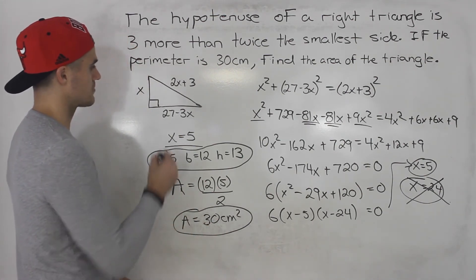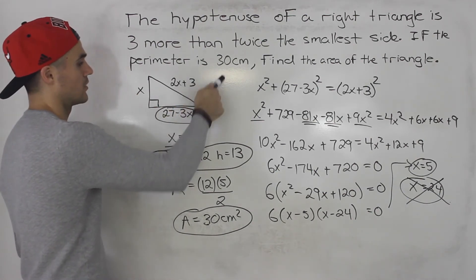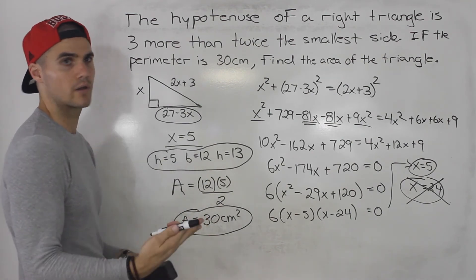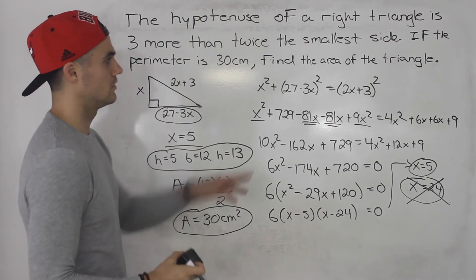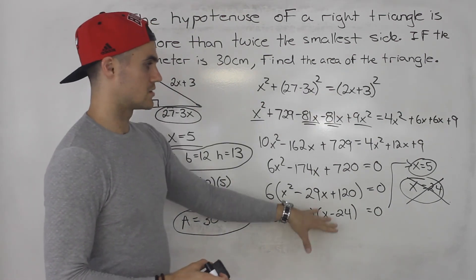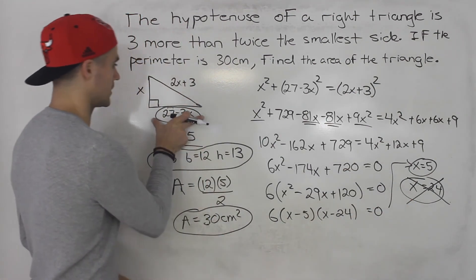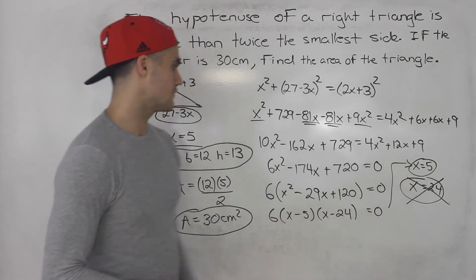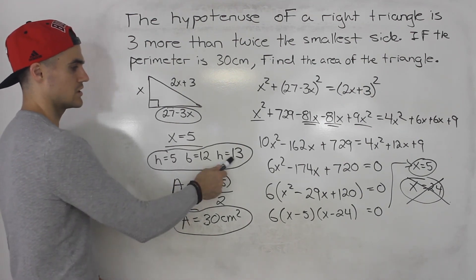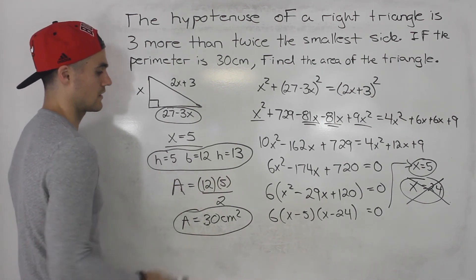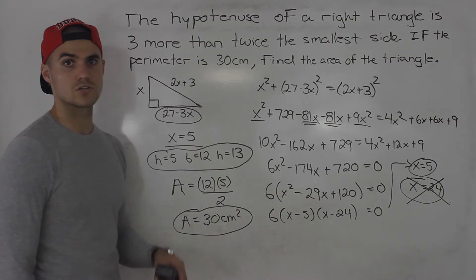The area is the same number as the perimeter — that's just a coincidence, not always going to happen. So 30 centimeters squared is the answer. The trickiest part was getting an expression for that third side using the perimeter. Once you have that, everything is in terms of one variable, Pythagoras' theorem applies, and you solve for x. x equals 24 doesn't work, so x equals 5. Plug in x equals 5, get the dimensions, and find the area — 30 centimeters squared.